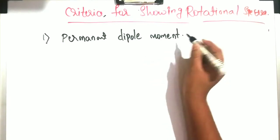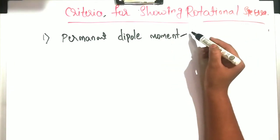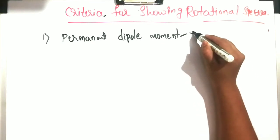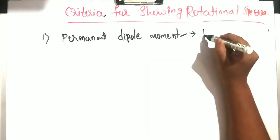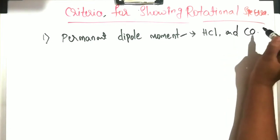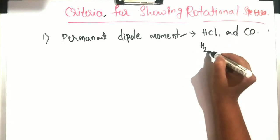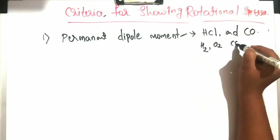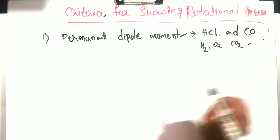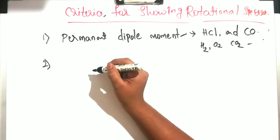The first criteria for showing the rotational spectrum is permanent dipole moment. Examples of molecules with permanent dipole moment include HCl and carbon monoxide — these will show rotational spectra. Whereas H₂O₂ and CO₂ will not show rotational spectra because they don't have a permanent dipole moment. The second criteria is that the molecule should absorb radiations.